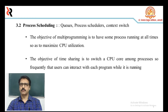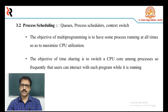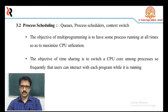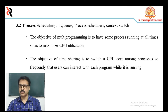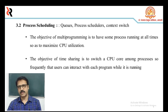The objective of multiprogramming is to have some process running at all times so as to maximize CPU utilization. The objective of time sharing is to switch a process among processor cores so frequently that users can interact with each program while it is running. To meet these objectives, the process scheduler selects an available process from a set of several available processes for program execution on a core.